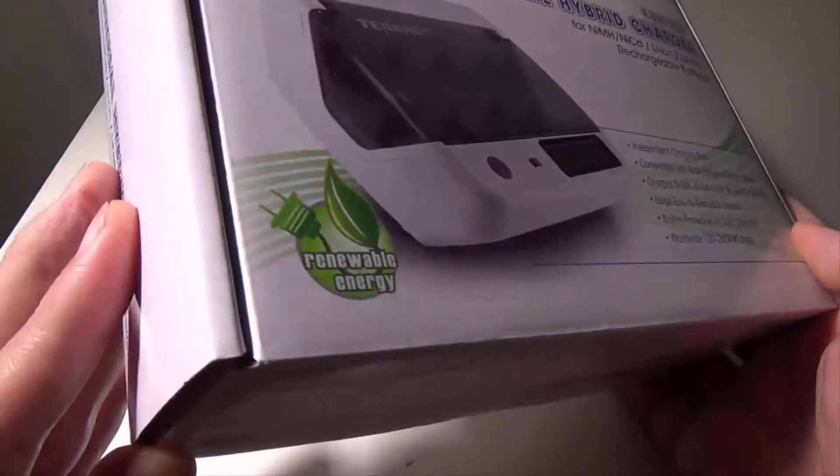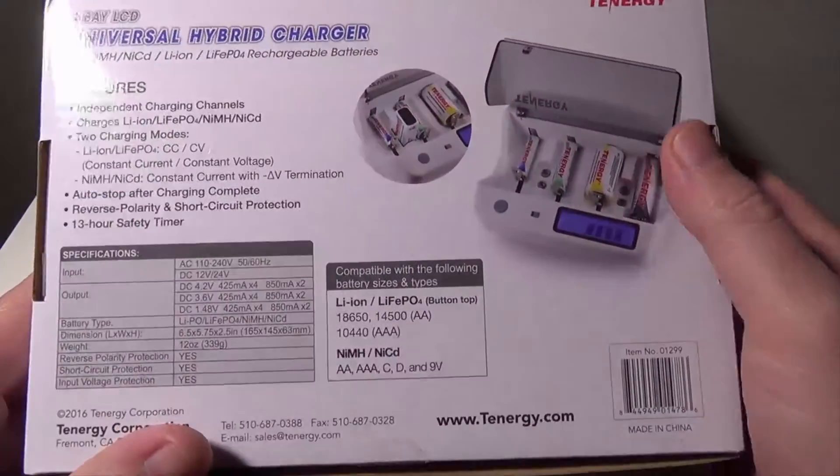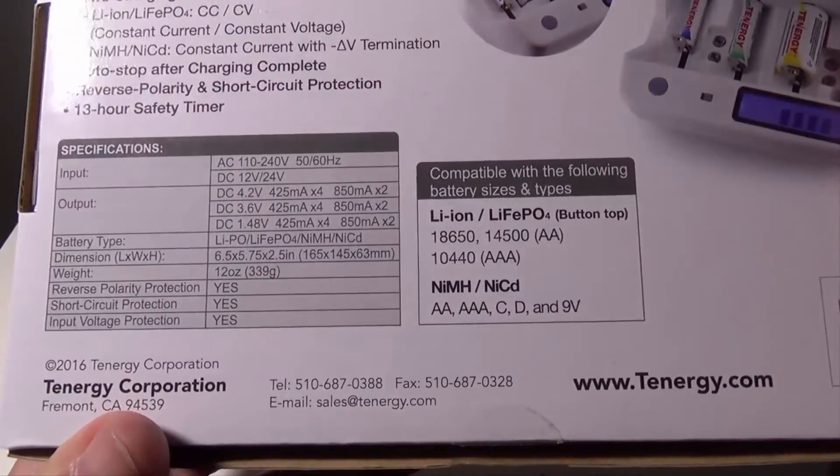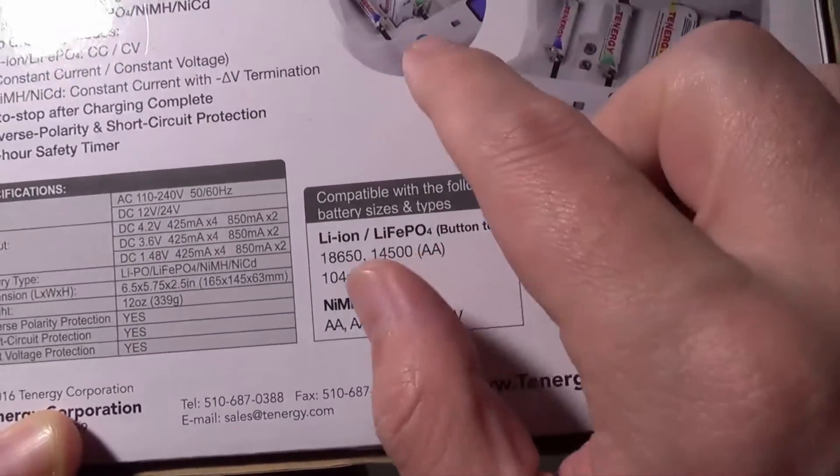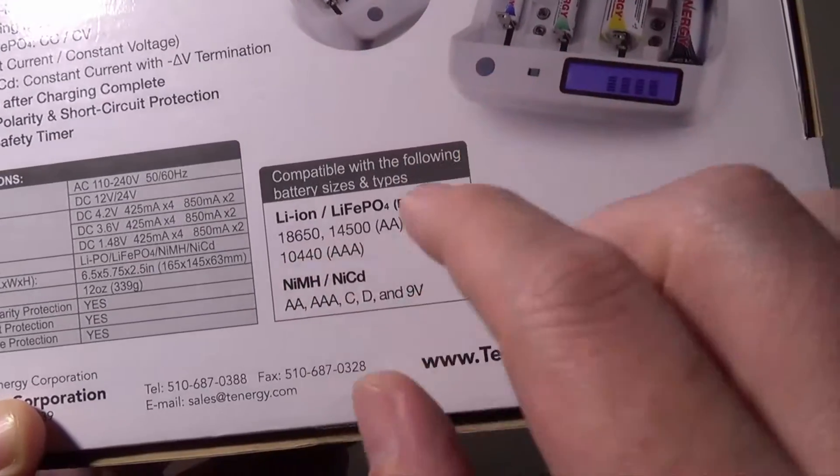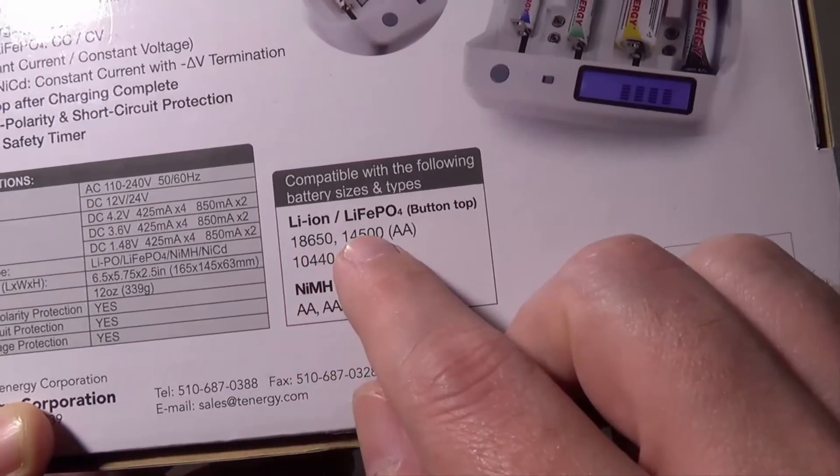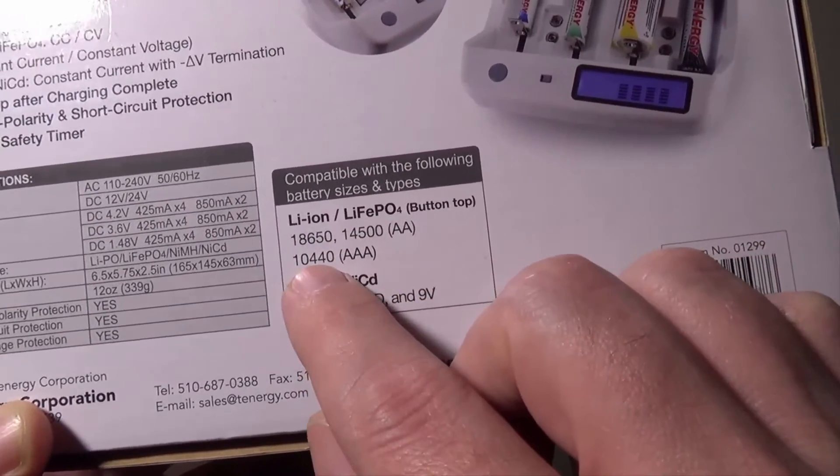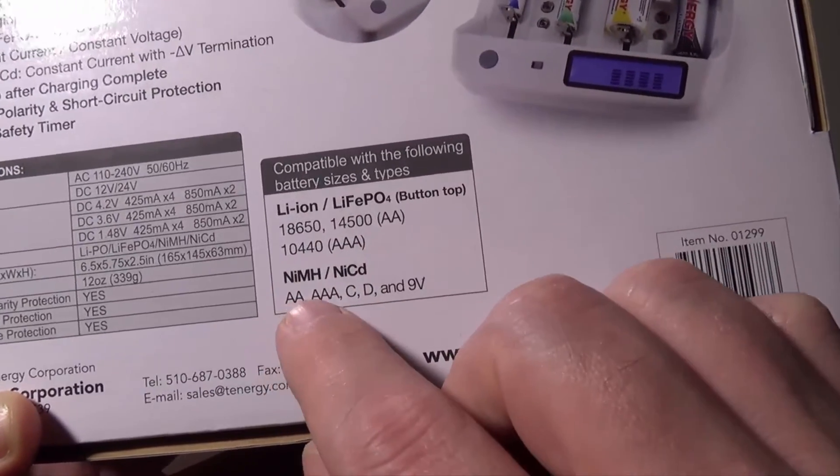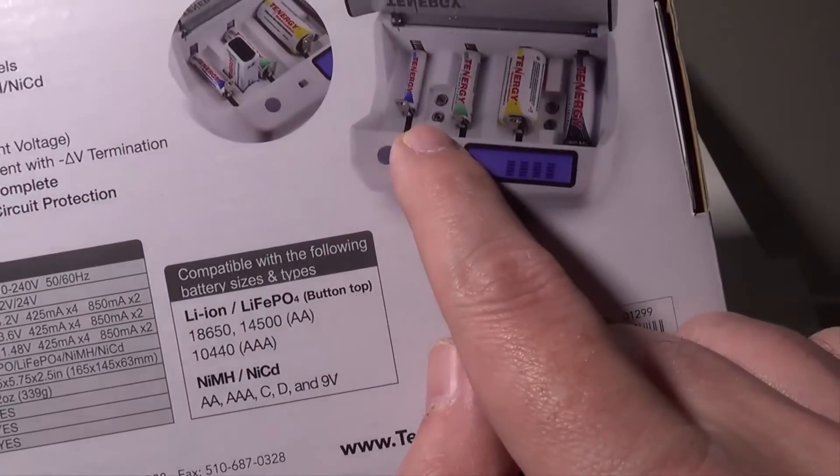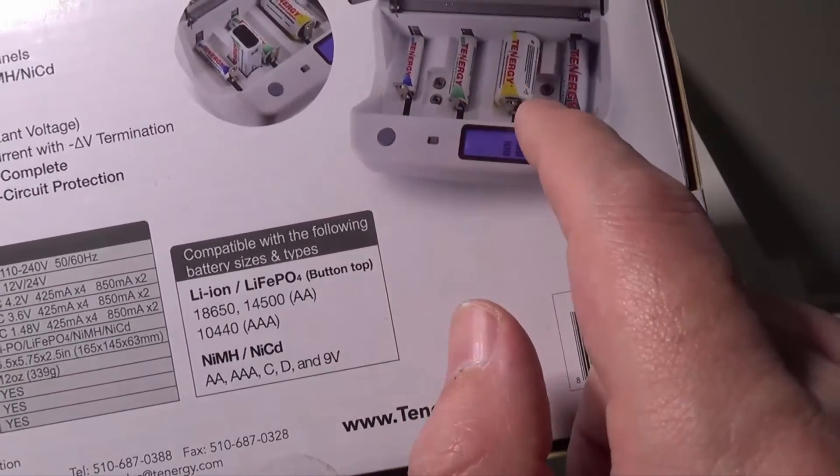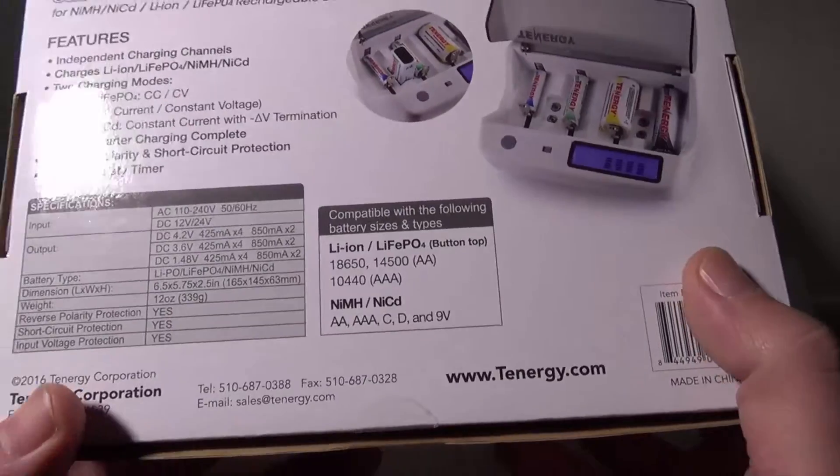Let's take a look on the back. There are specifications that we can go over really quickly. This particular charger is very cool because it will actually do 18650, 14500, 10440 batteries, double-As, triple-As, Cs, Ds, and it'll even do 9-volts. As you can see from in between the channels there, there's a spot to do rechargeable 9-volts, so you can pretty much cover most of the basics.